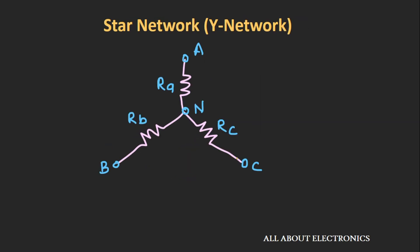Similarly, in a star network, the circuit elements are connected in such a way that they form a shape of a star. Also, if you see this network upside down, it looks like a shape of a Y. That is why sometimes this network is also known as a Y network.